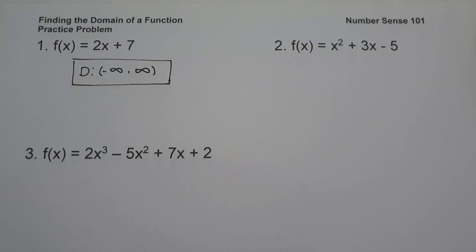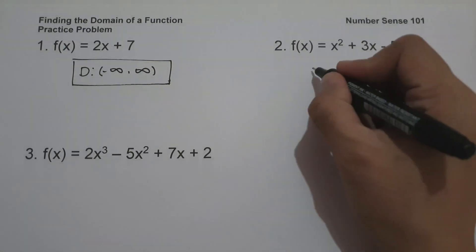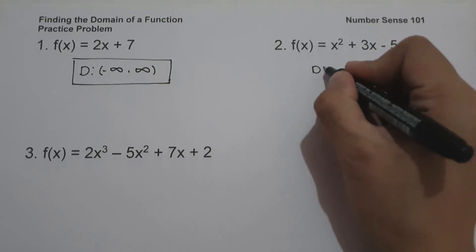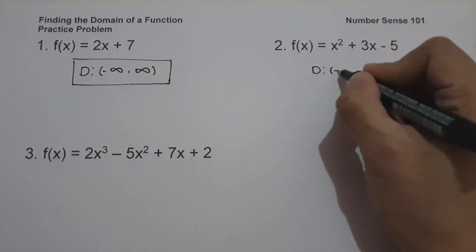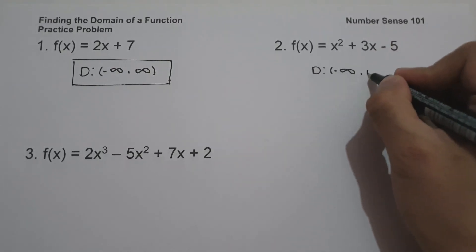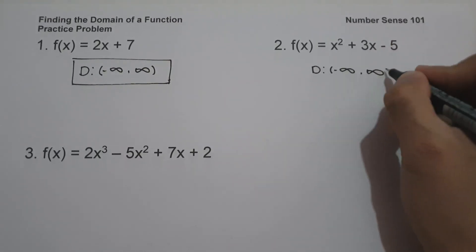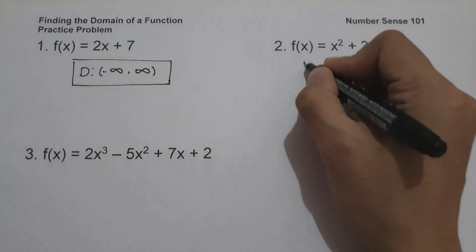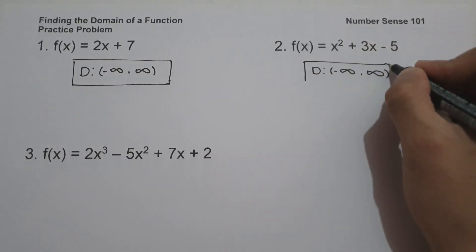On example number two, f of x is equal to x squared plus 3x minus 5. If you have a quadratic function, the domain is still all real numbers, so this will be from negative infinity up to positive infinity, and this will be our answer.